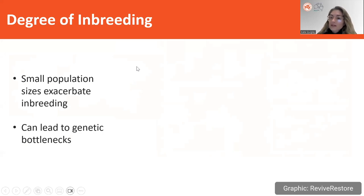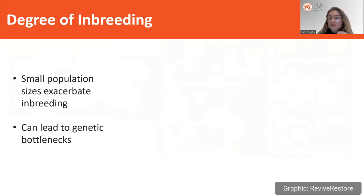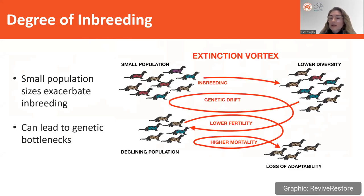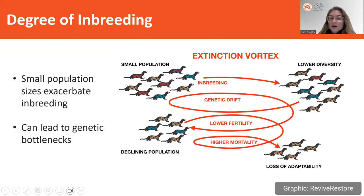Another metric aside from genetic diversity that we often hear about is inbreeding. Inbreeding is really exacerbated by small population sizes, which can occur after some kind of disturbance event that kills a large number of individuals in a population. This becomes very worrying because it can lead to genetic bottlenecks. In this figure we can see the impacts of an extinction vortex, where a small population of individuals with different genetic backgrounds — symbolized by their DNA double helix in different colors — has been reduced by a disturbance event, leaving a small population that leads to inbreeding and subsequently lower genetic diversity.